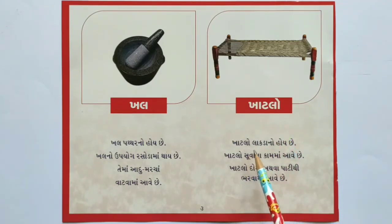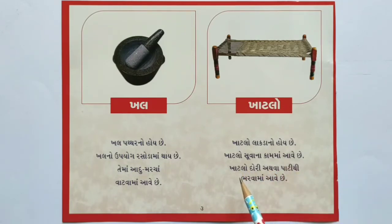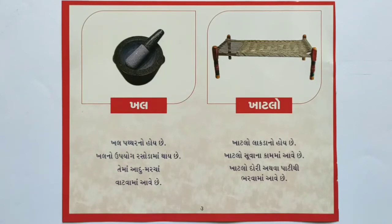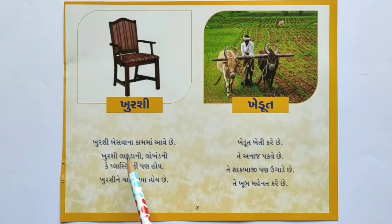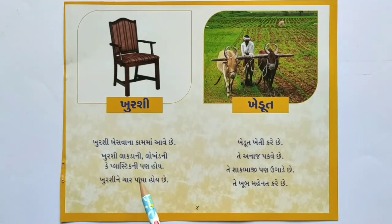ખાટલો - લાકડાનો હોય છે. ખાટલો સૂવાના કામમાં આવે છે. ખાટલો દોરી અથવા પાટ/પટ્ટીથી બને છે. ખૂબ સરસ! હવે જાતે વાંચો. ખુર્સી - બેઠવાના કામમાં આવે છે. ખુર્સી લાકડાની, લોખંડ અથવા પ્લાસ્ટિકની પણ હોય.